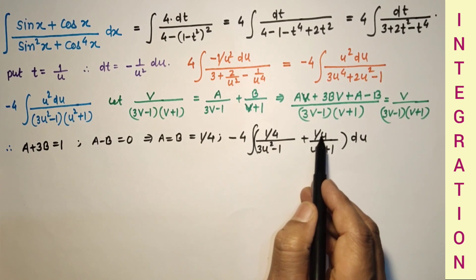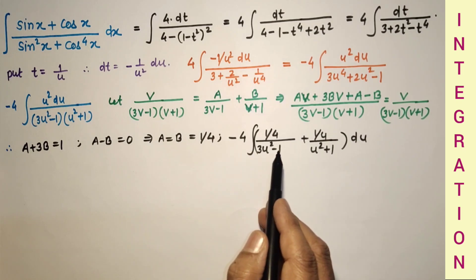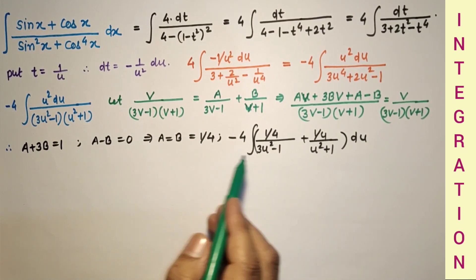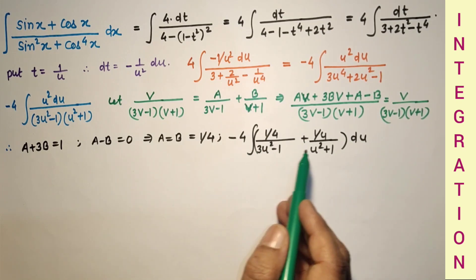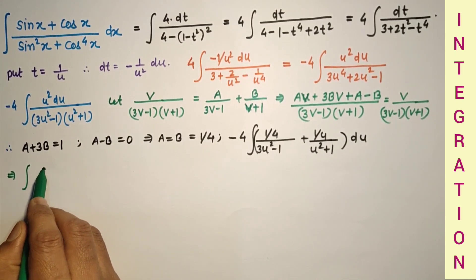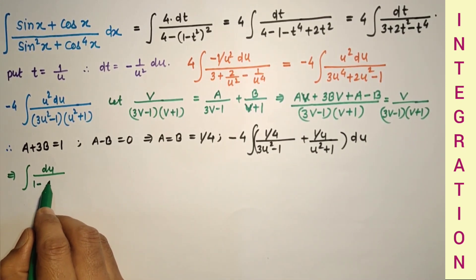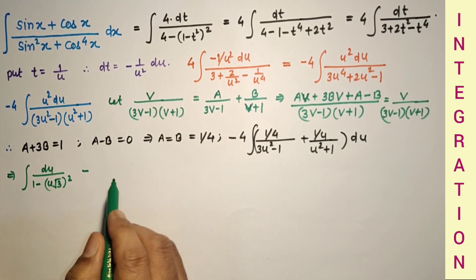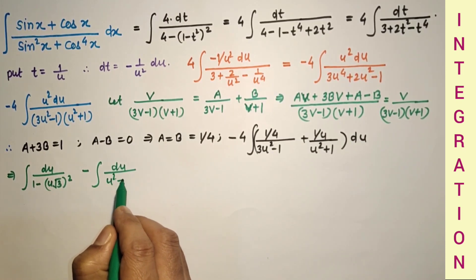The 1/4 cancels with the −4 outside, and multiplying through by −1, the signs flip. This gives us ∫du/(1 − 3u²), which can be written as ∫du/(1 − (u√3)²), minus ∫du/(u² + 1²).